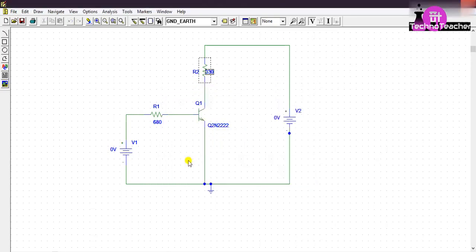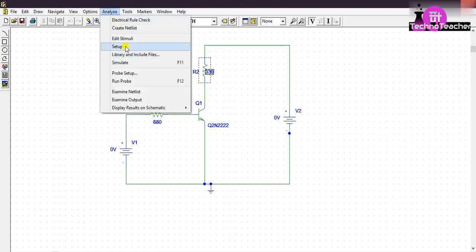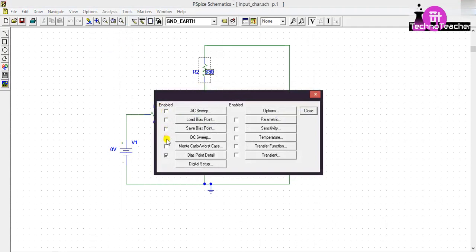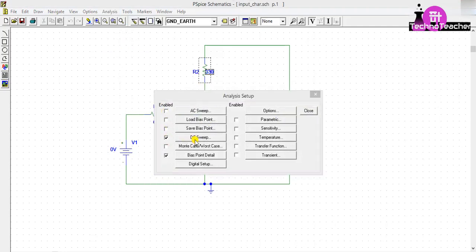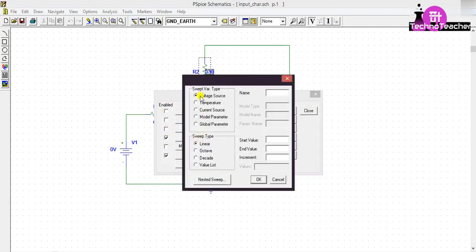Now go to Analysis, then Setup. Check on DC Sweep, then click on DC Sweep. This has to be voltage source and this is linear.